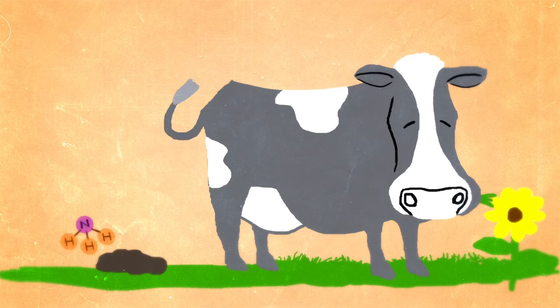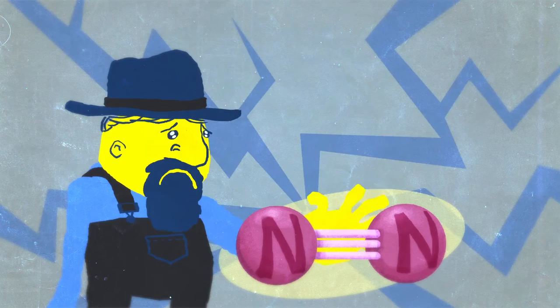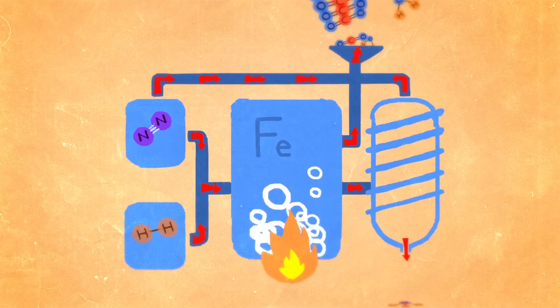Even though 78% of the air we breathe is nitrogen, its triple bond was too stable for us to break and use. Until a scientist named Haber engineered a synthetic method for fixing nitrogen from the air into ammonia, one of the most produced chemicals worldwide.